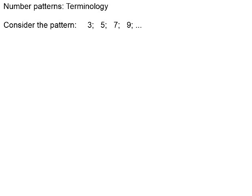Let's take a look at some of the terminology we associate with number patterns. Looking at the pattern 3, 5, 7, 9 — consider whether something predictably happens each time the term number changes. Is the same thing happening to get from 3 to 5 as to get from 5 to 7? You can see that you are adding 2 each time. We call this number that we add the common difference. So 2 is the common difference.